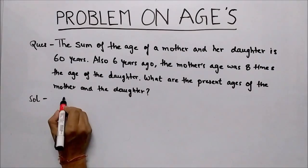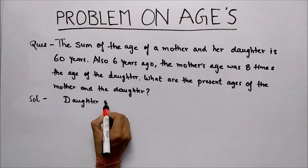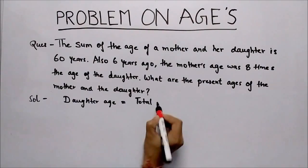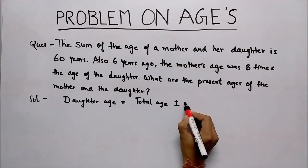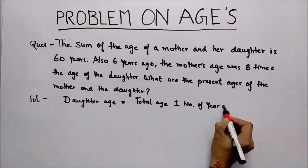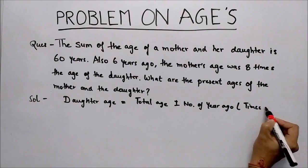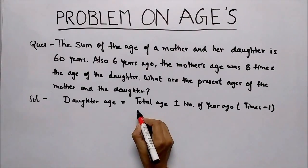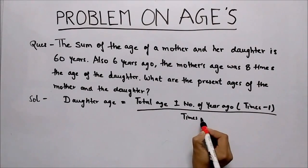we have a dedicated formula. Daughter's age equals total age plus or minus number of years ago, times minus 1, upon times plus 1.